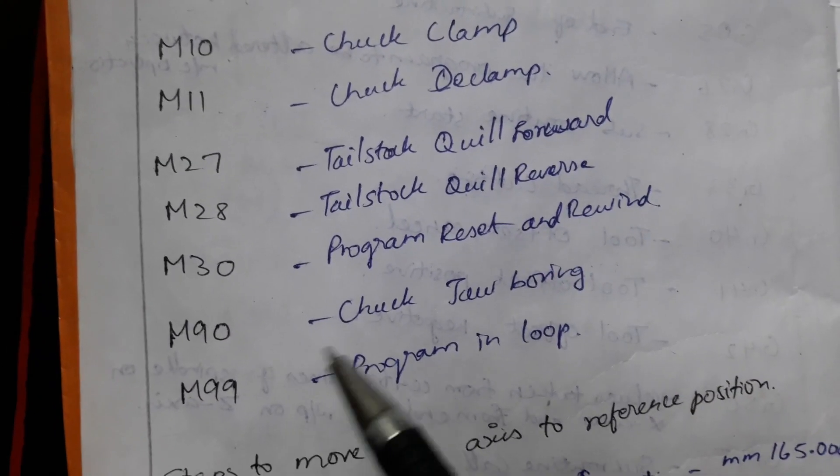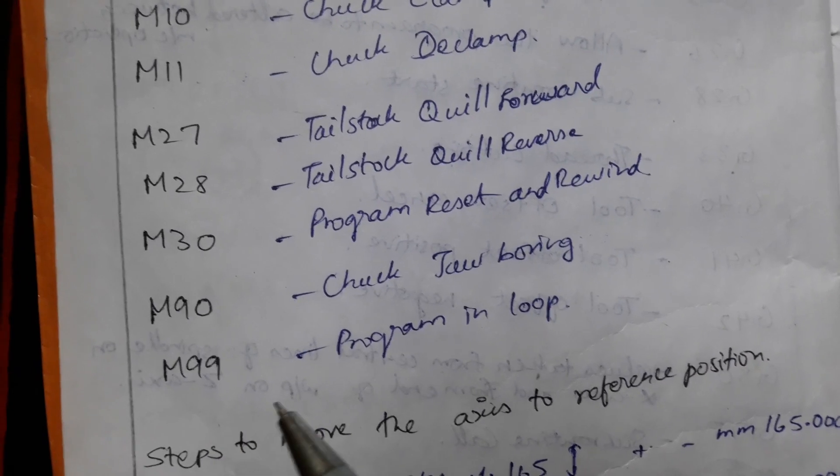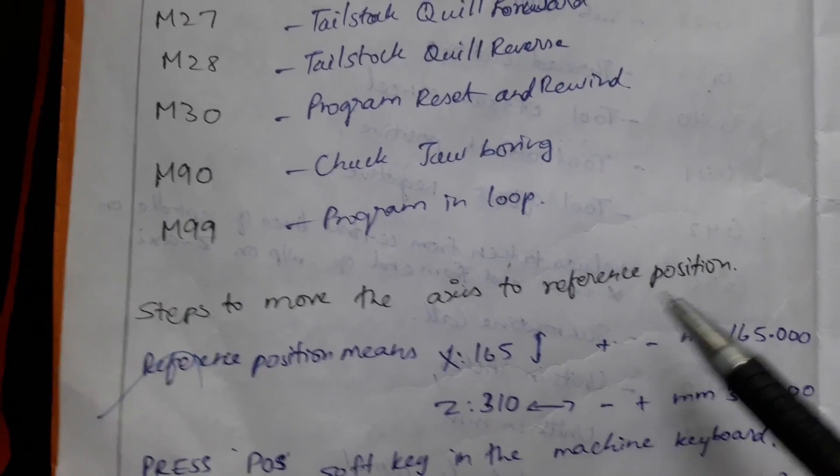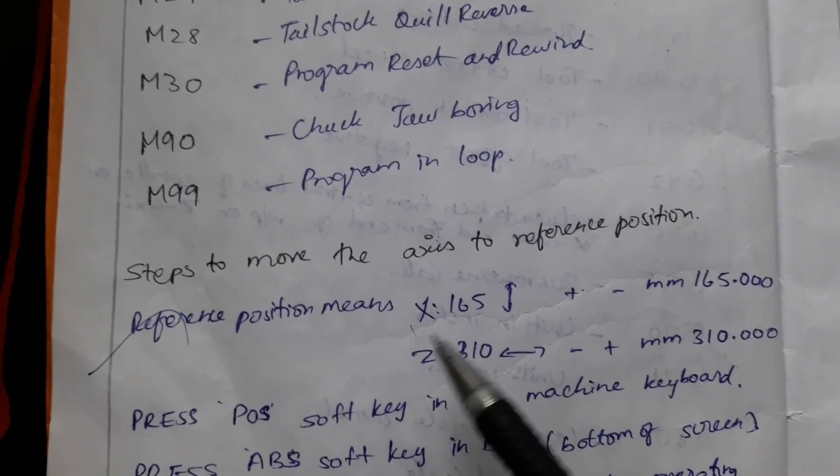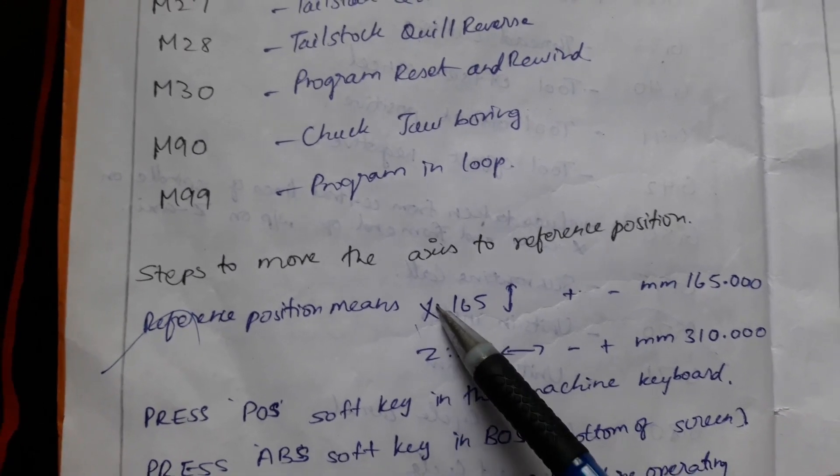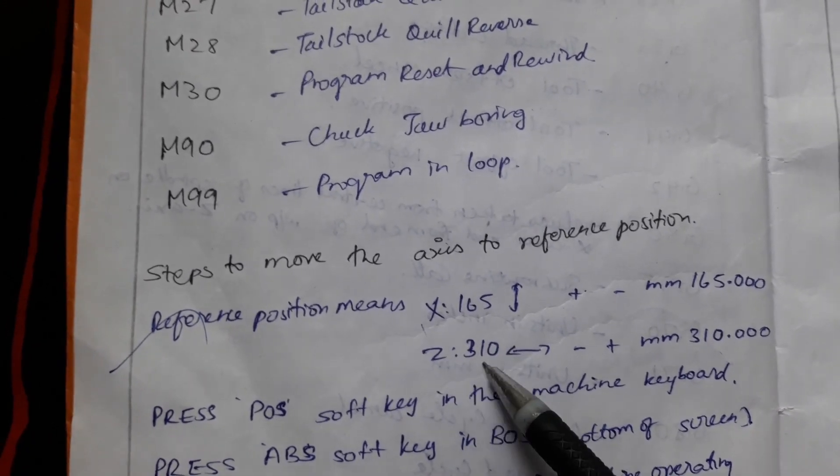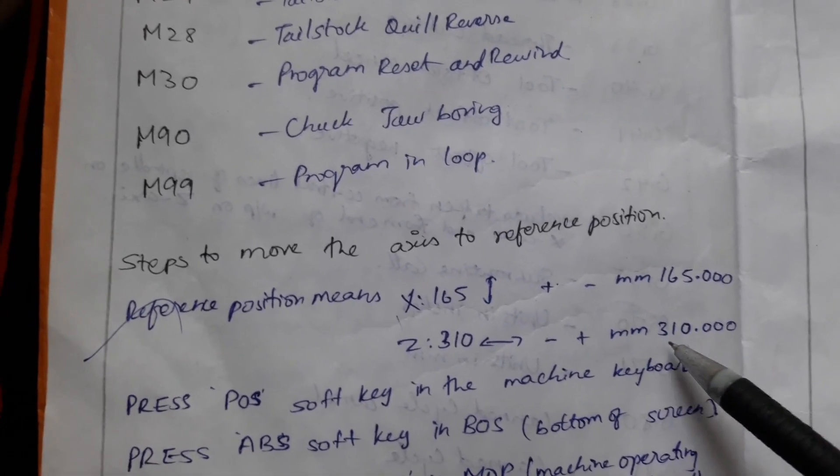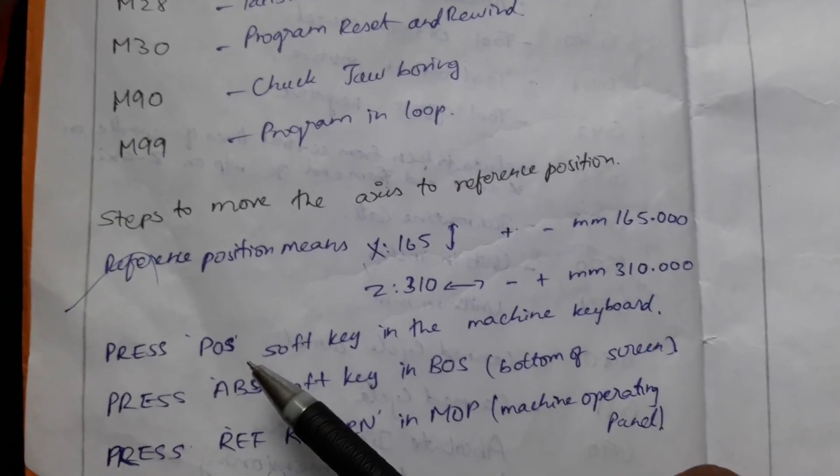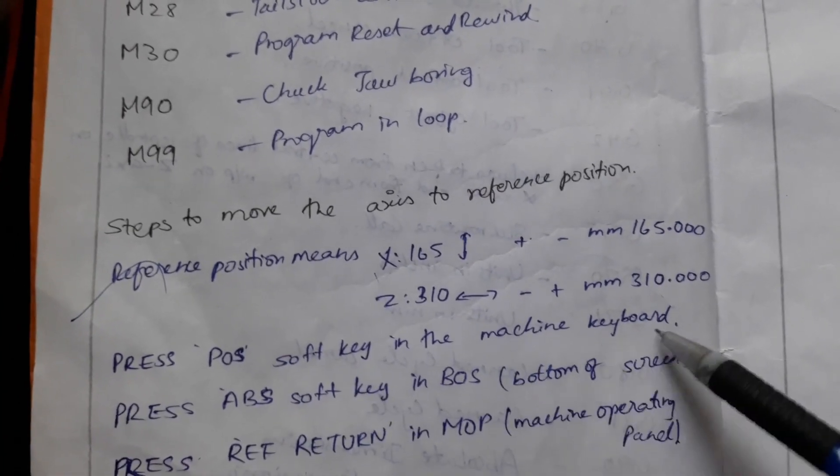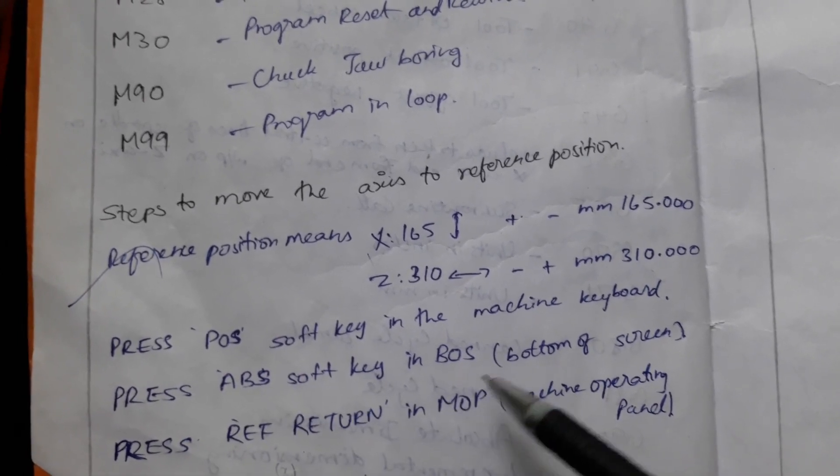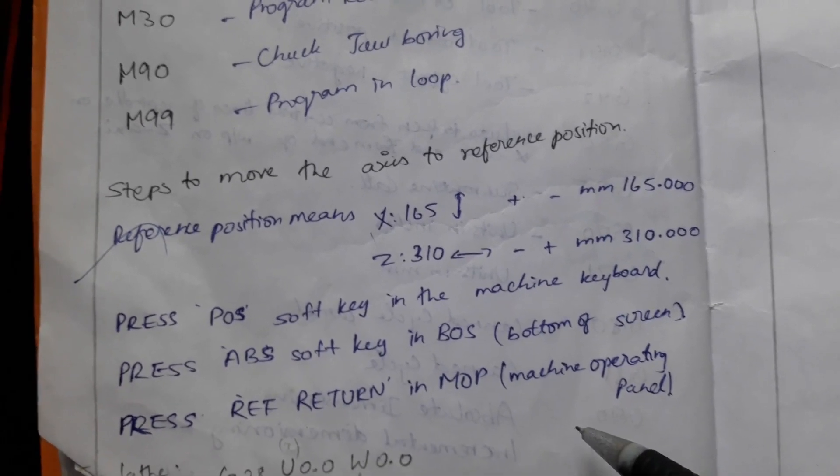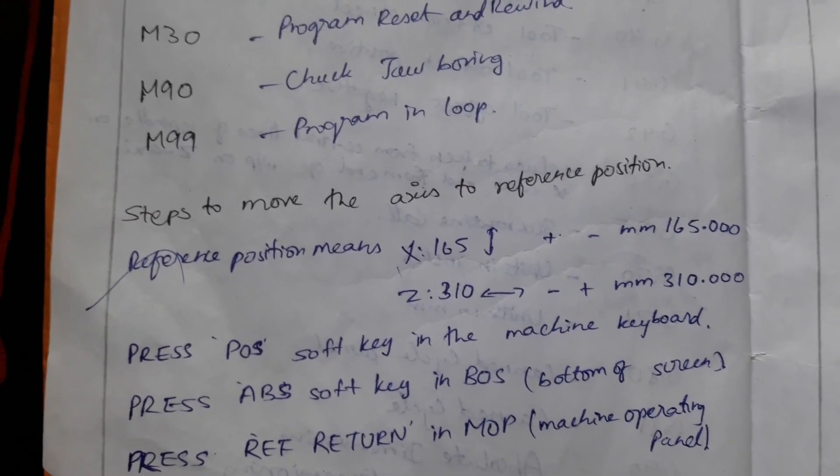Steps to move the axis to reference position. Reference position means the home portion of the tool in the machine: X 165, Z 310, plus or minus 165.000, 310.000. Press POS or soft POS soft key in the machine keyboard. Press ABS soft key in bottom of the screen. Press reference button in machine operating panel.